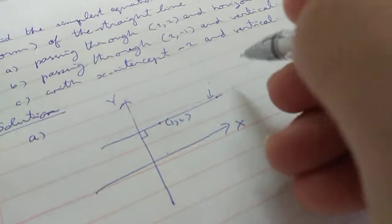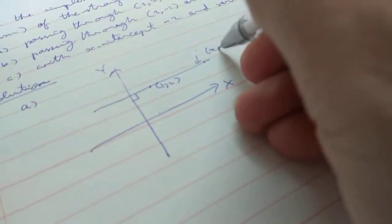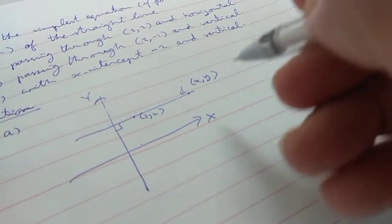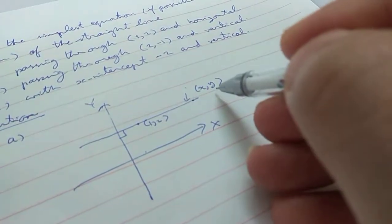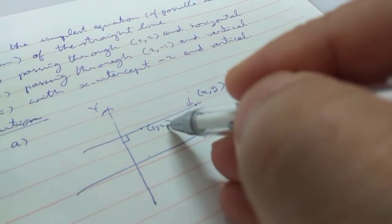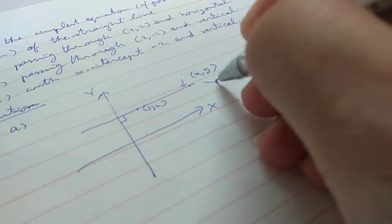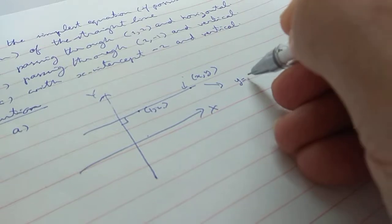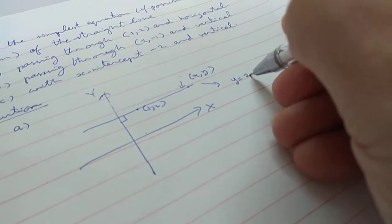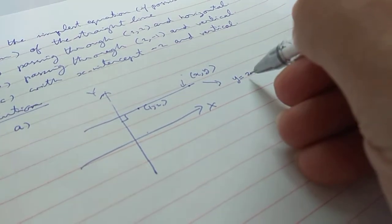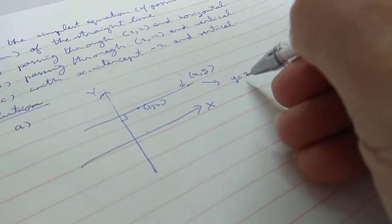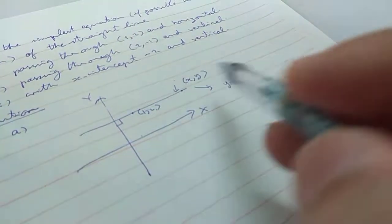If you consider any point on this line, (h,y), then h can be any number. y must be equal to 2. So the equation of the line is y equals 2. That means all the points (h,y) with y equal to 2 will be on this line.